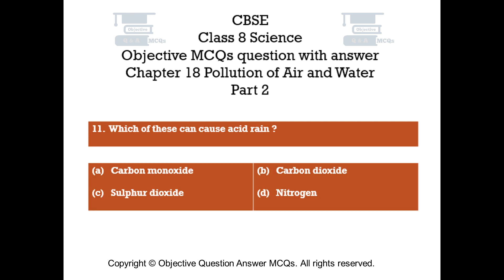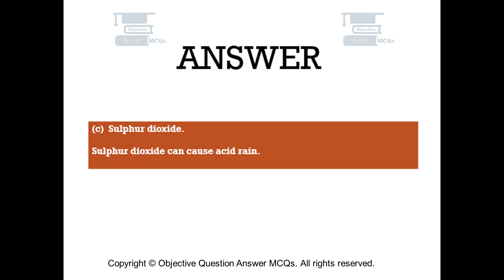Question number 11. Which of these can cause acid rain? Option A: Carbon monoxide. Option B: Carbon dioxide. Option C: Sulfur dioxide. Option D: Nitrogen. The right answer is Option C — Sulfur dioxide. Sulfur dioxide can cause acid rain.